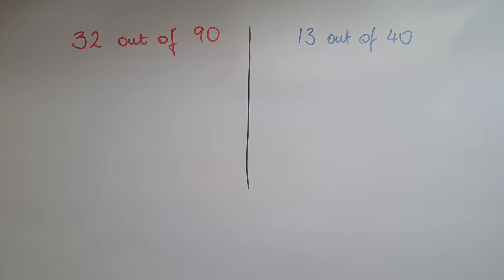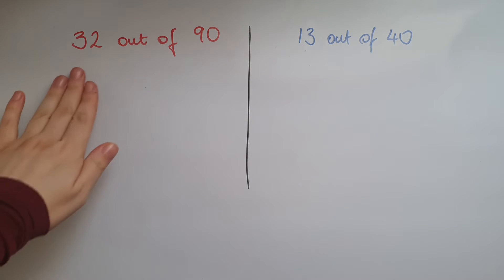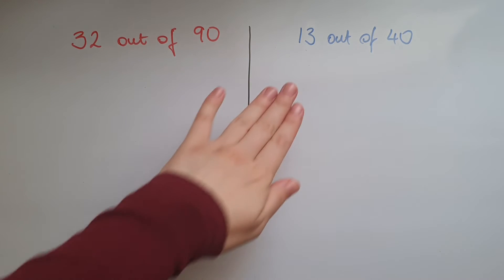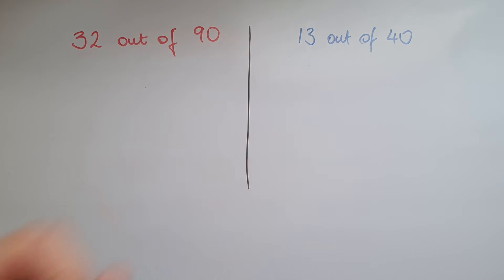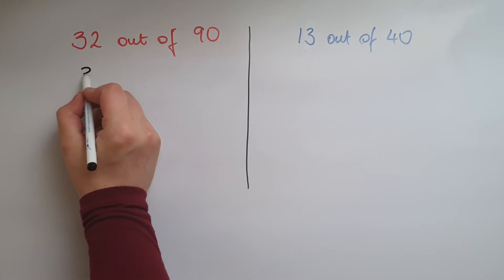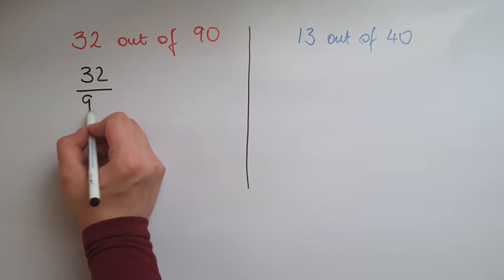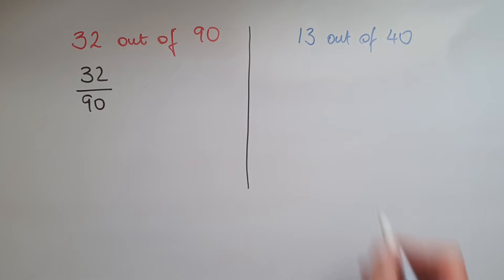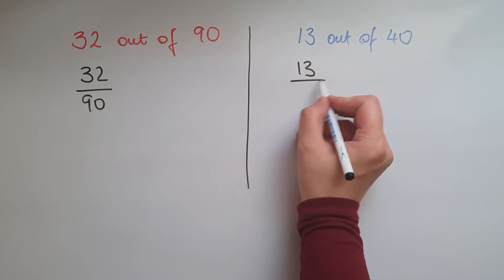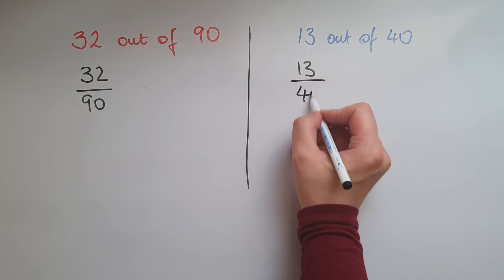In this video we'll learn to compare two quantities using percentages. So we've got 32 out of 90 and 13 out of 40. Which one is greater? So we'll do 32 out of 90 and 13 out of 40.